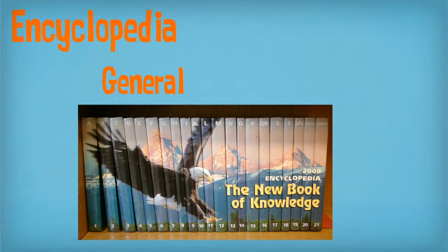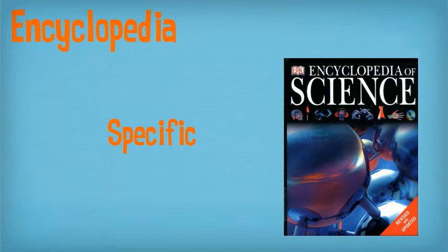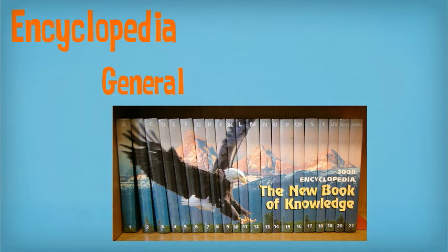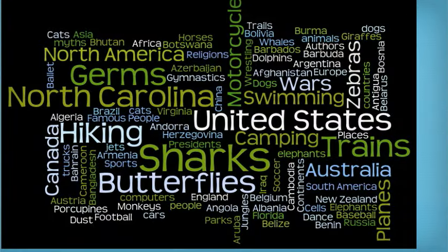Encyclopedias can be general or specific. General encyclopedias cover a whole bunch of different topics. It can cover anything from animals to people to places, wars, pretty much whatever you can think of.